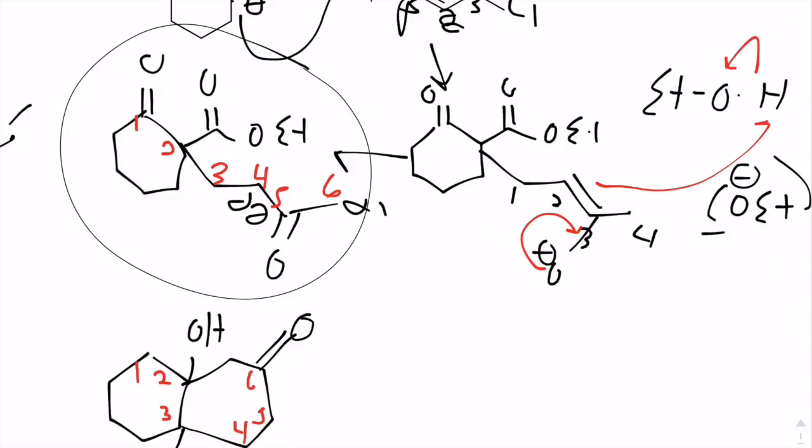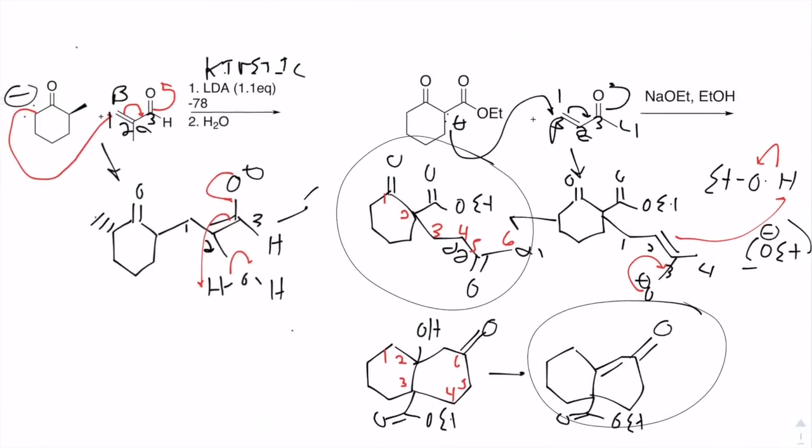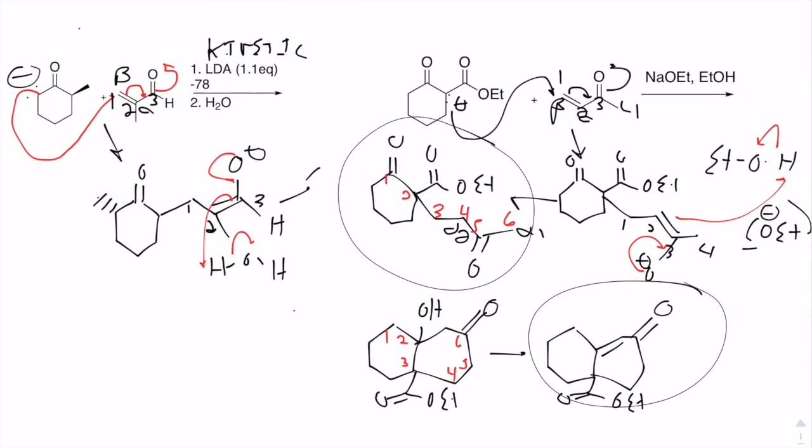So now, remember, we can think about whether or not we are going to dehydrate. We are under thermodynamic conditions, so we would expect that the alkene is going to form in conjugation with that ketone. And that is the end product of our Robinson annulation reaction. And that's pretty much it.